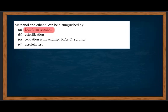Methanol (CH₃OH) does not give iodoform, while ethanol (CH₃CH₂OH) gives iodoform — CHI₃. Ethanol has a CH₃CO group formed upon oxidation, which converts to CHI₃. This is the basis for distinguishing methanol from ethanol.